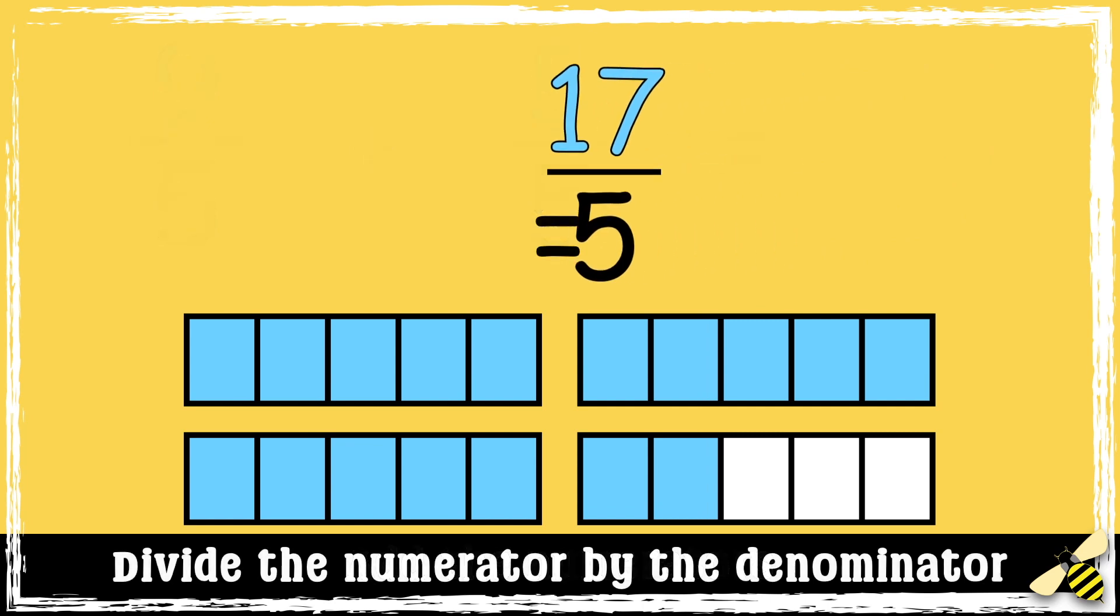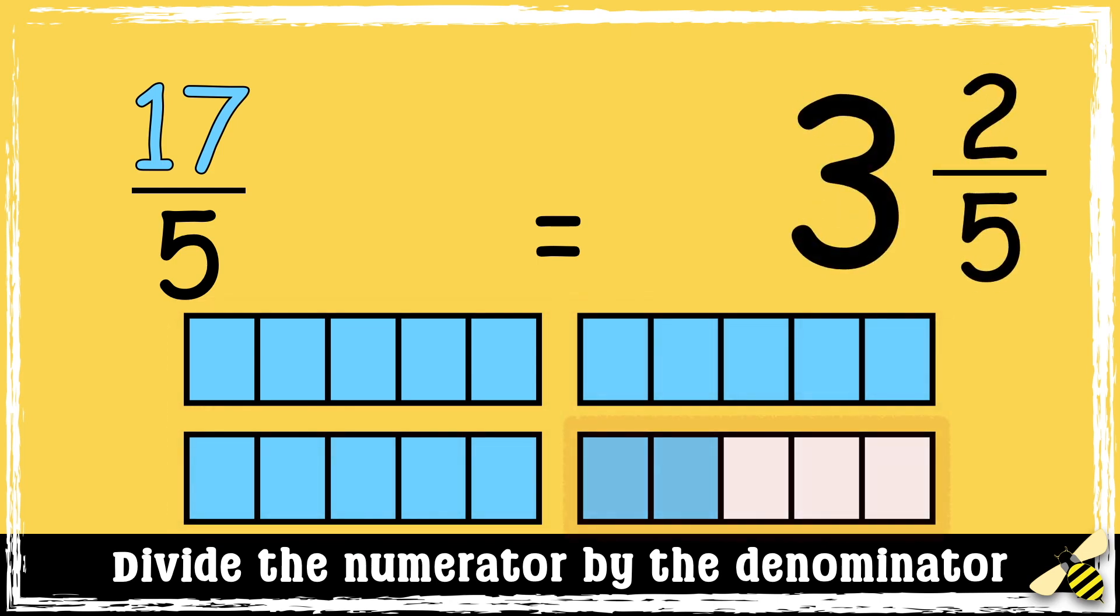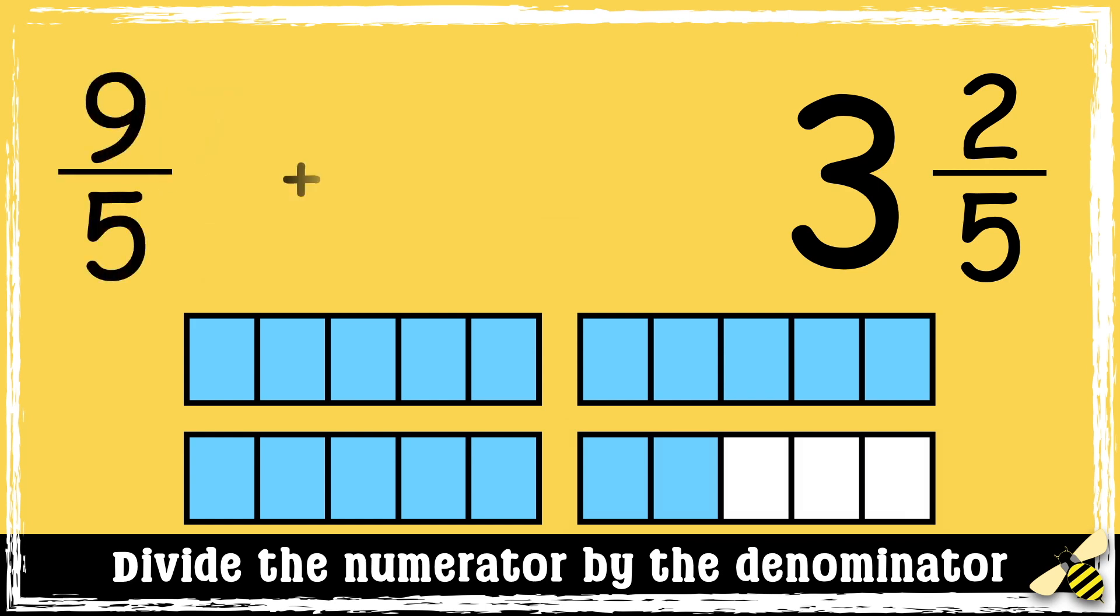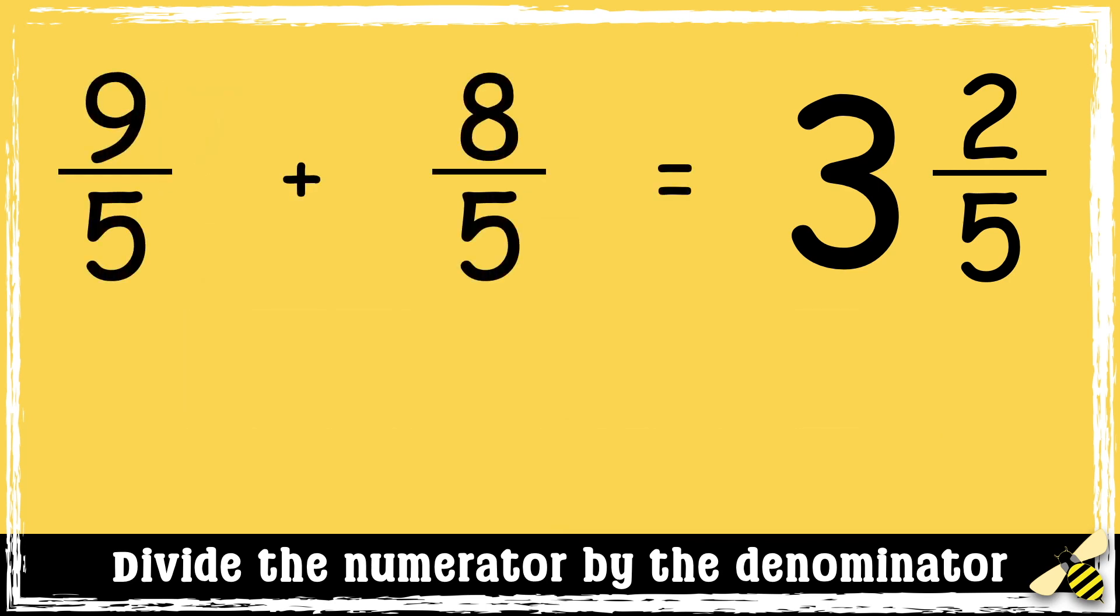We now have an improper fraction, so we need to convert it to a mixed number. So we have 3 whole and 2 fifths left over. So the answer is 3 and 2 fifths.